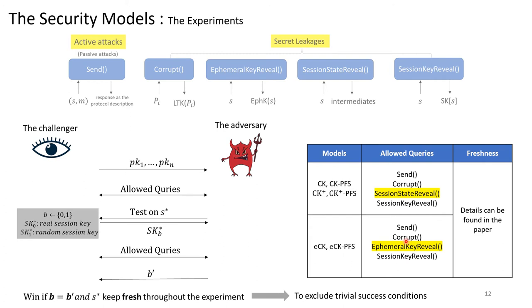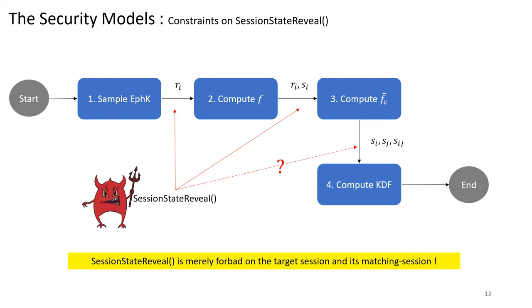Here we should notice that in the CK and CK+ models, session state reveal query is allowed, but in the ECK model, only ephemeral key reveal is allowed. Next, we should clearly define the output of session state reveal to see their differences. Once again, we take one session as an example. Its lifetime can be viewed as four steps. Some intermediates are passed from one to the next. Can these all be revealed? In particular, in the last step, all session key materials are included. Of course, in all models, session state reveal is forbade on the target session and its matching session to avoid trivial success. But that's all. For other sessions related to the target session, this query is allowed.